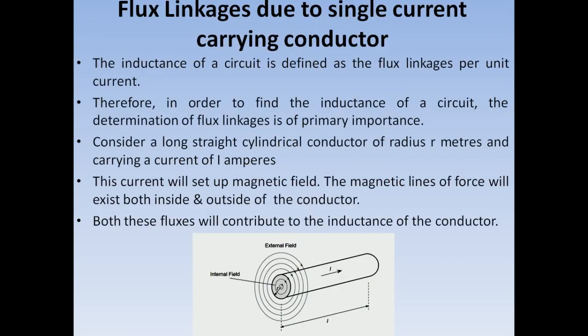In order to derive the relation for inductance of a single current carrying conductor, we assume the conductor is a cylindrical one with radius R as shown in the figure, carrying current of magnitude I. The current flowing through this conductor sets up magnetic lines of force around it. As shown in the figure, these magnetic lines of force occur not only outside but also inside the conductor. Both internal flux and external flux together contribute to the inductance value of the conductor.